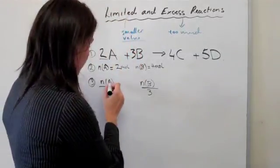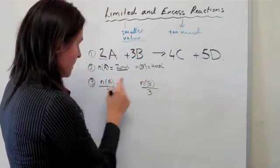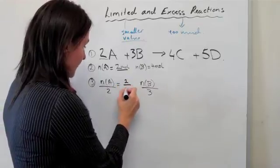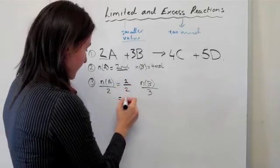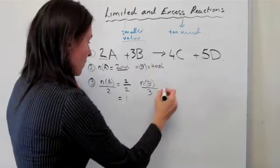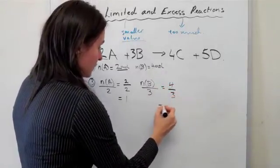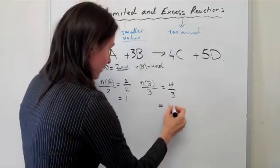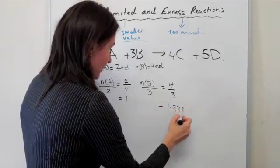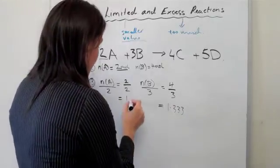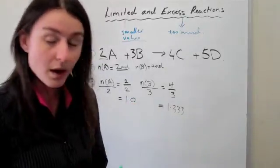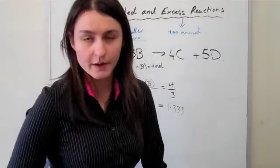If we do this now, we've got the mole of A so we just need to put 2 divided by 2 and that's just going to give you 1. Whereas if we do the same for this one, you get 4 divided by 3 which will give you 1.333 recurring.